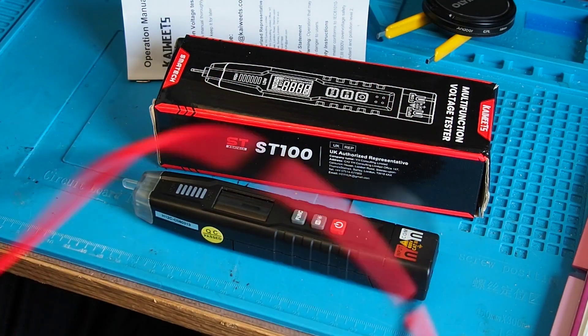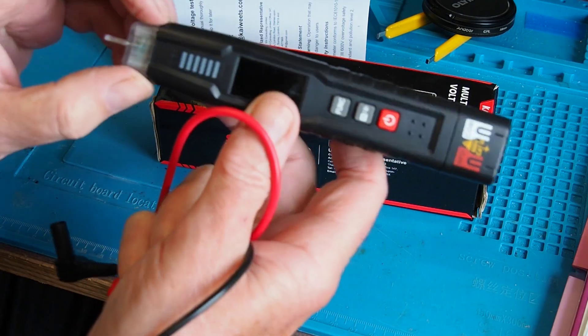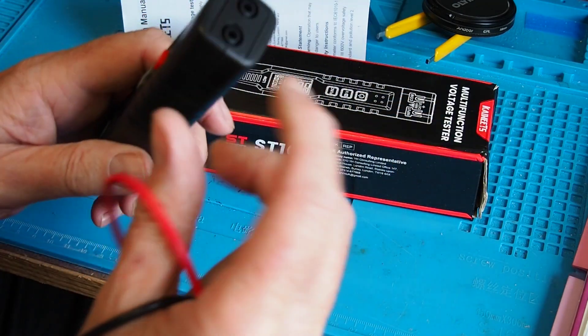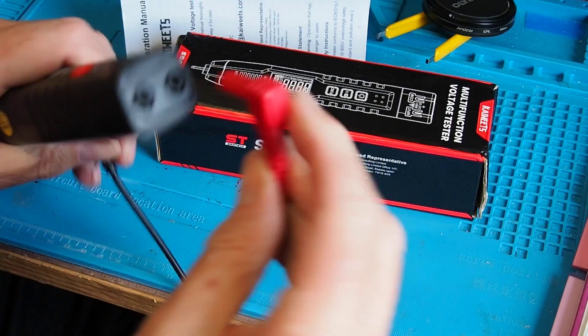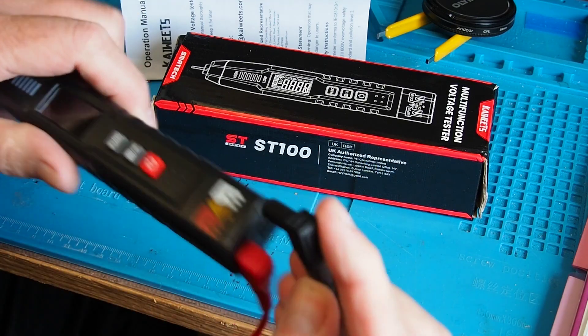We get two leads because unlike some meters this meter doesn't have a connection at this end. That's just the live wire sensor. The actual meter connections are at the top here, fairly clearly marked with red and common for the black one.